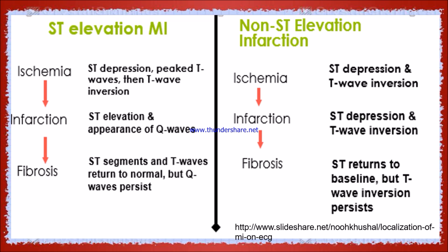During ischemia there is lack of blood supply, ST depression, and T wave inversion. With infarction, ST depression and T wave inversion persist. When fibrosis occurs, it returns to baseline but T wave inversion persists because there is no oxygen supply. Due to the partial damage, we have depression — don't confuse with elevation. We only have partial damage, that's why it goes for ST depression.